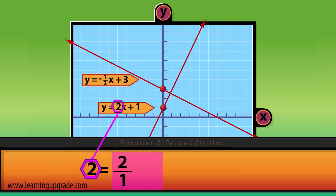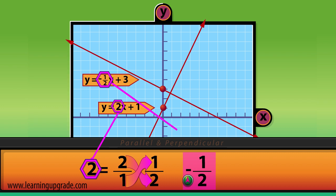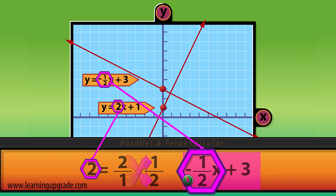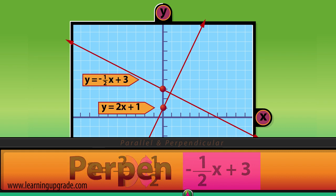take the slope 2 and flip it to 1 half, and change the sign to negative 1 half. So the line y equals negative 1 half x plus 3 will be perpendicular.